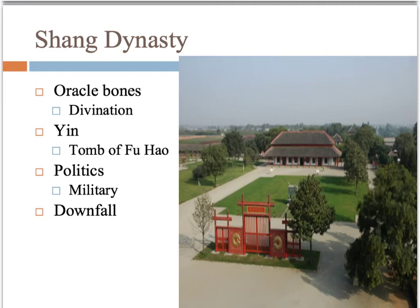Now let's talk about the Shang dynasty. The story of oracle bones is actually pretty interesting — how they came about and how they began to be studied. In ancient Chinese medicine, bones have been used for centuries. People would crush up bones and use them medicinally. In the very late 1800s, someone was going to crush up some of these bones for medicinal purposes, and they looked and saw writing on them. From that, historians began to study the concept of oracle bones.